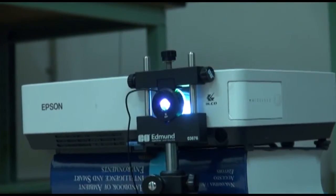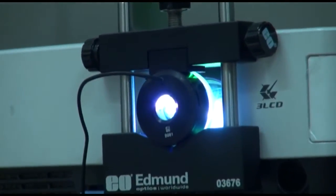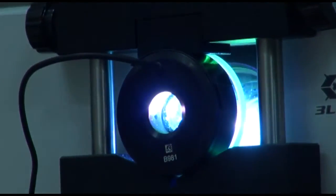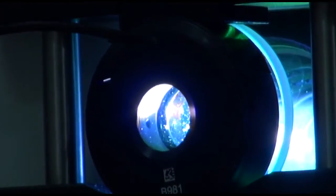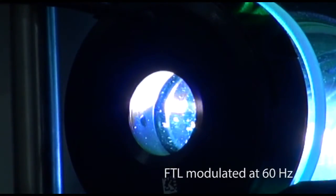The extended depth-of-field projector is achieved by placing an electrical focus tunable lens, FTL, before the projector's objective. We periodically modulate the focal length of a projector at a frequency that is higher than the critical flicker fusion frequency.